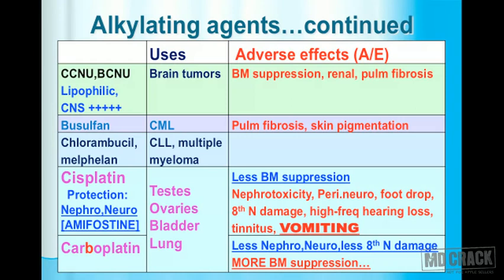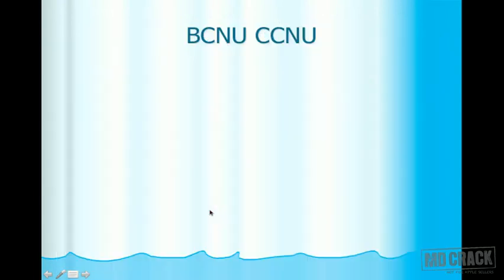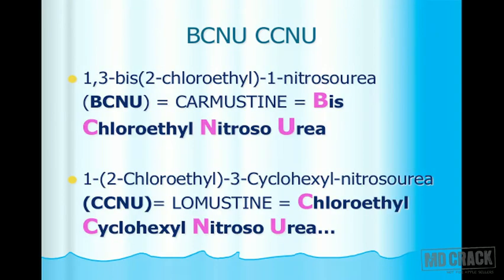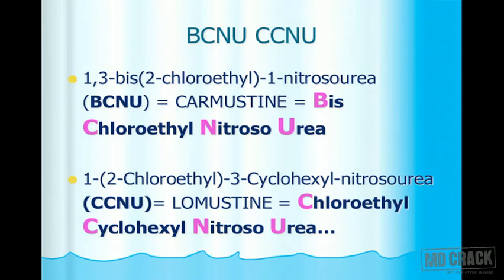Summary of the alkylating agents slide: CCNU and BCNU for brain tumors; busulfan for CML; chlorambucil and melphalan for CLL; cisplatin and carboplatin for testes, ovaries, bladder, and lung. BCNU's full name is 1,3-bis(2-chloroethyl)-1-nitrosourea, also called carmustine. CCNU is 1-(2-chloroethyl)-3-cyclohexyl-nitrosourea, also called lomustine — hence the two C's in CCNU for chloroethyl cyclohexyl.